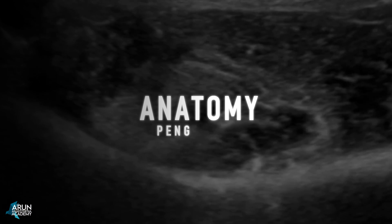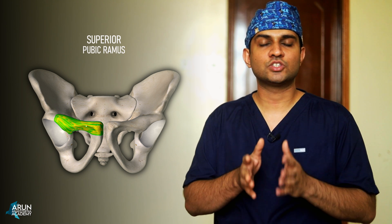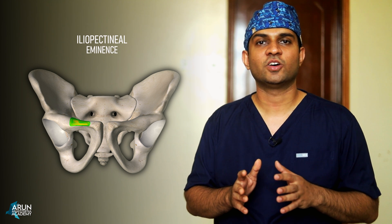Let's see the anatomy relevant to giving the PENG block. There are key bony landmarks to know, as they are significant when viewing the sonoanatomy. The anterior superior iliac spine, medially and inferiorly the anterior inferior iliac spine, and further medially the superior pubic ramus — with the specific part called the iliopectineal eminence. These four bony landmarks have also been seen when giving the suprainguinal fascia iliaca block, and the initial ultrasound scanning is almost the same for both blocks.